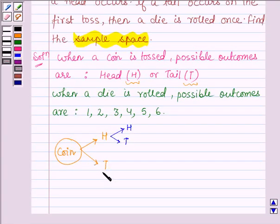And if it turns up with tail, then a die is rolled and the possible outcomes of a die are 1, 2, 3, 4, 5 and 6.